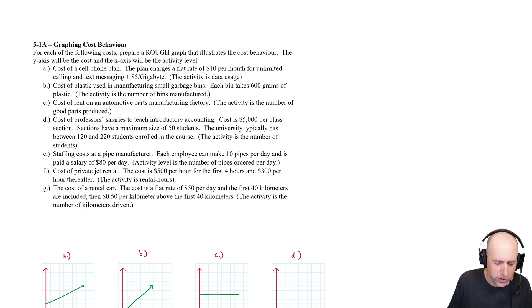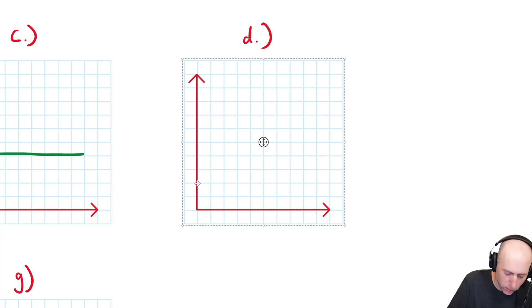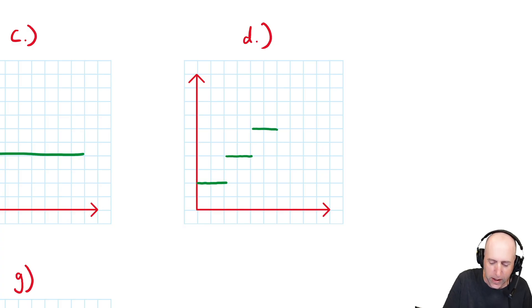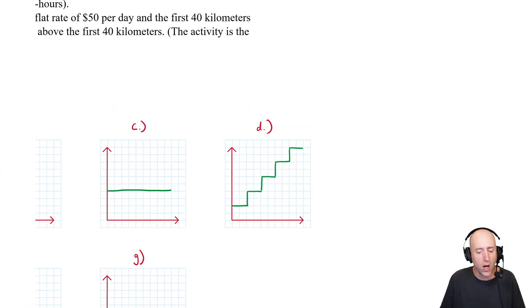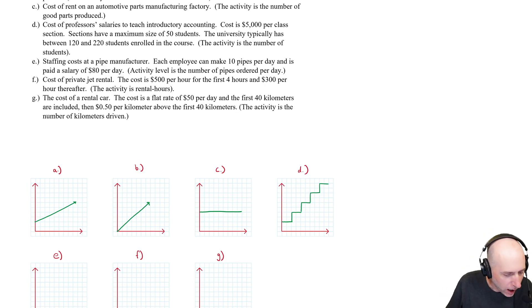Part D: cost of professor salaries to teach introductory accounting. Cost is $5,000 per class section. Sections have a maximum size of 50 students. The university has between 120 and 220 students enrolled in the course at any given time. So this is a classic example of a step fixed. If I have zero to 50 students, I've got to pay one professor $5,000. 50 to 100 students, I've got to pay two professors, the total is $10,000. It just steps up every additional section. You've got to add an additional professor and you've got to pay that additional salary amount. So it ends up looking like a big staircase in terms of the cost, and we call that a step fixed.